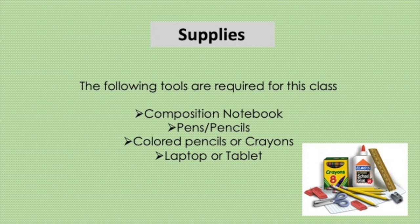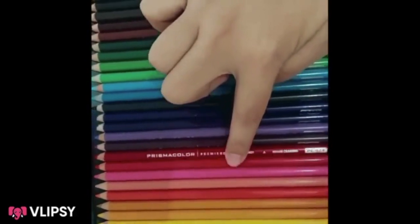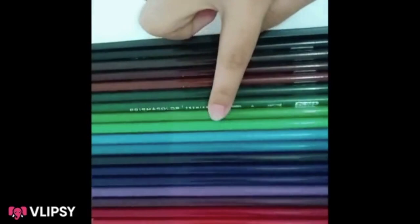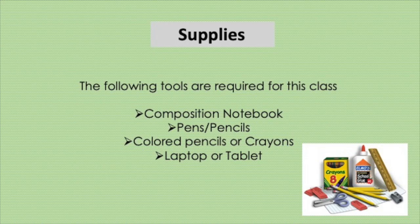This class is pretty simple in terms of supplies. You need a composition notebook — really whatever notebook you use, it doesn't matter this year. Usually I'm really strict about that, but I'm not going to be this year. Just make sure the notebook you have has at least 100 pages, because usually we end up around page 160 or 170. Make sure you have a full 100-page notebook at a minimum. You also need pen, pencil, something to write with, colored pencils or crayons, and then your laptop or tablet so that you have Schoology access — clearly you're watching this on something, so you're good to go.